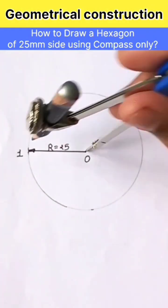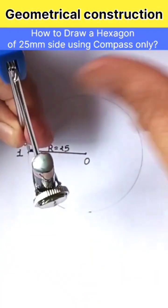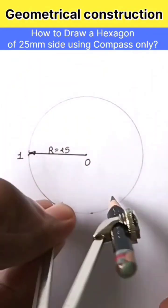radius equal to circle radius, draw an arc cutting the circle. Mark that point as 2.